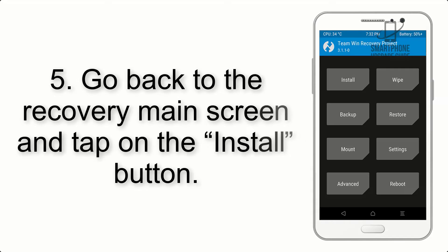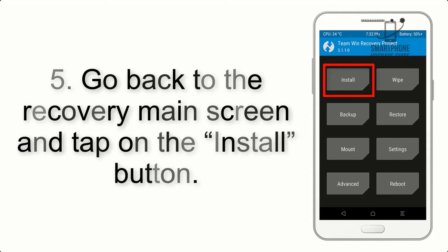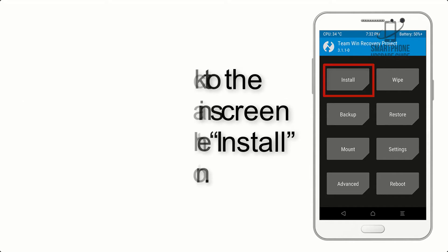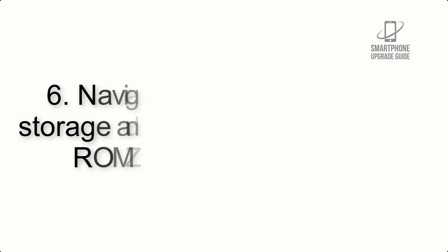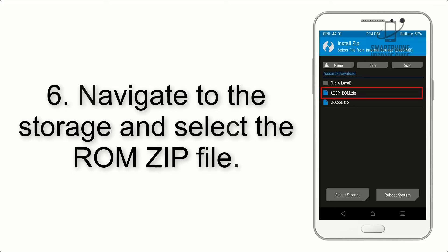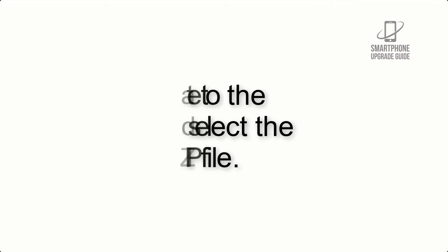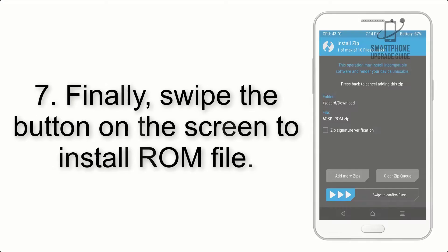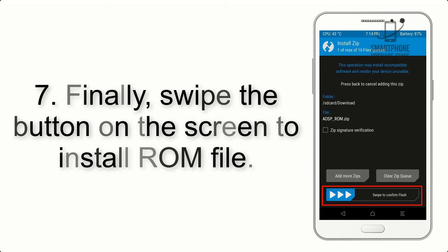Step 4: Swipe the button to wipe the device. Step 5: Go back to the recovery main screen and tap on the Install button. Step 6: Navigate to the storage and select the ROM zip file.